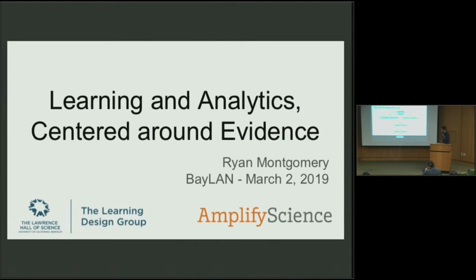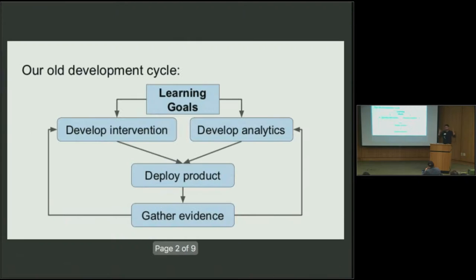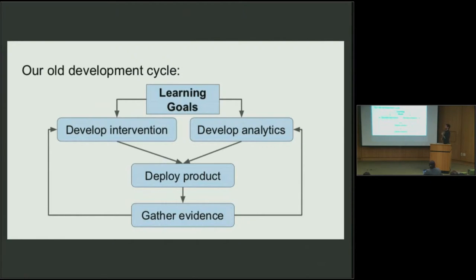The situation we started with: we had the Next Generation Science Standards as our learning goals, and two teams of people working on the same unit — say, a unit on magnetism. Some were developing the educational intervention, the activities students would do, while others with more analytics backgrounds were working on the assessments and analytics. That was nice because you could parallelize, but the problem was when those things came together, they had often drifted a little bit.